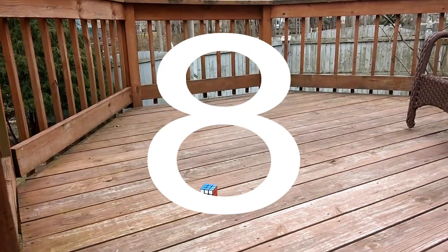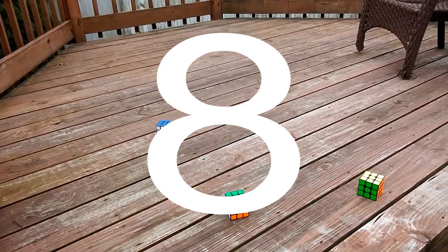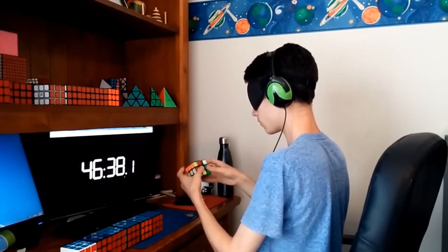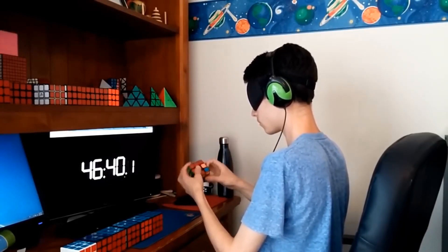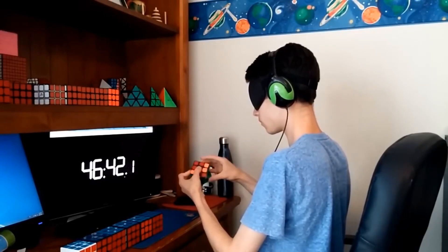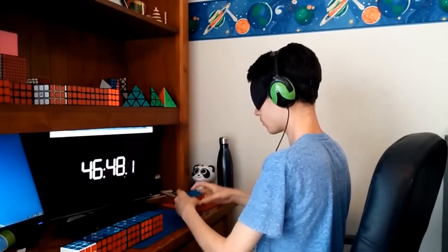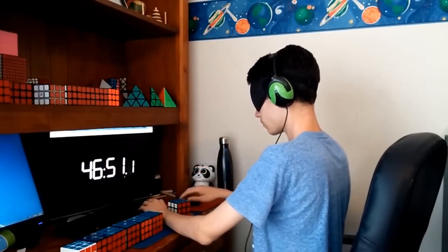Next, at number 8, my favorite blindfolded event is 3x3 multiblind. This event basically solves the problems I have with 3x3 blindfolded, because, like 4 blind, my success rate is higher in multiblind than it is in 3 blind, and I'm sure that's because with multiblind, I'm not really going for a fast time at all. Instead, the goal is just to do as many cubes as possible. With that goal in mind, I make it a point to spend time reviewing what I've memorized so I don't mess up anywhere.